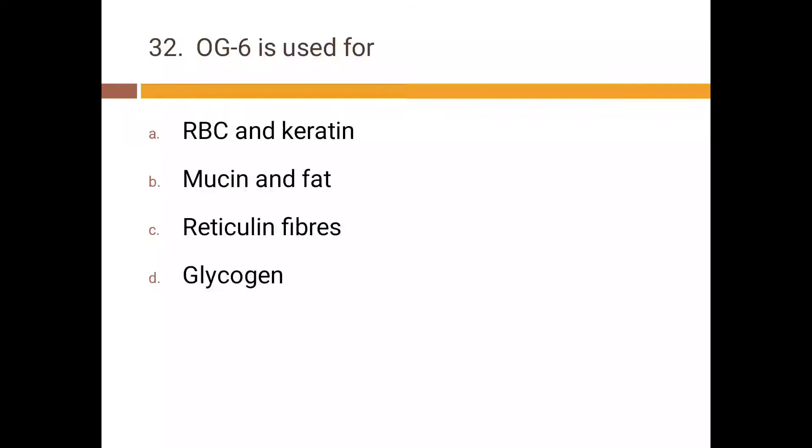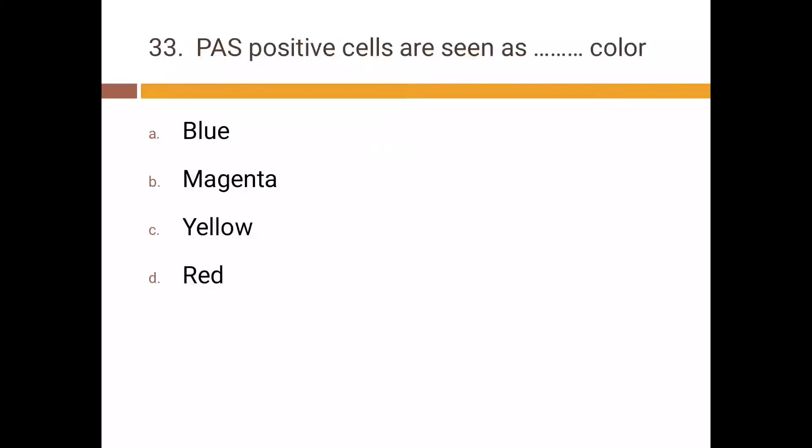OG-6 is used for: a) RBC and keratin, b) mucin and fat, c) reticulin fibers, d) glycogen. Correct answer is a) RBC and keratin. PAS positive cells are seen as the color: a) blue, b) magenta, c) yellow, d) red. Correct answer is b) magenta.